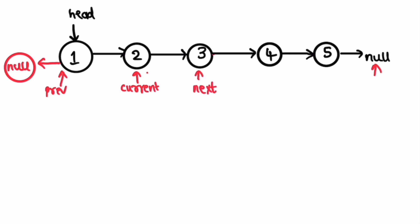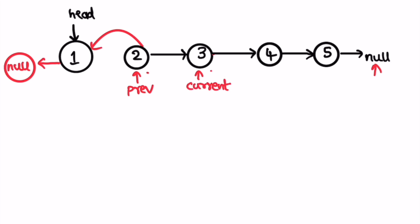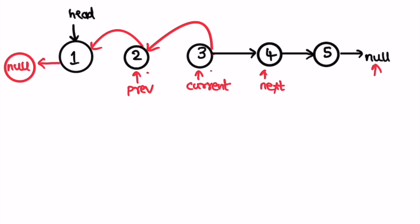For the second iteration, current.next points to previous, we remove that connection, then advance all three pointers: previous to current, current to next, and next to current.next (since next is not null). For the third iteration, we again point current.next to previous, remove the connection, and move previous to current, current to next, and next to current.next.